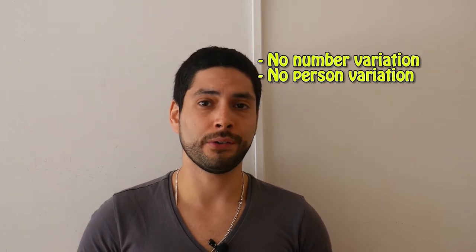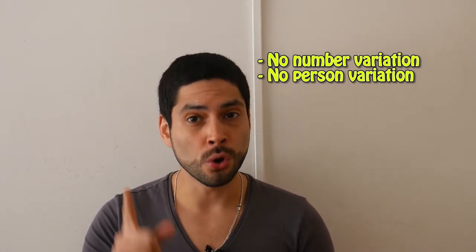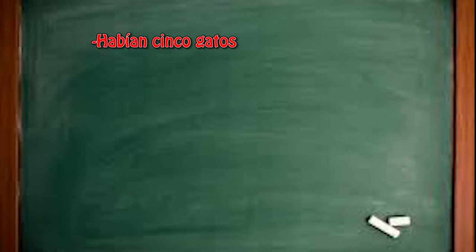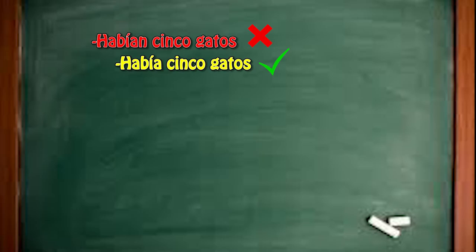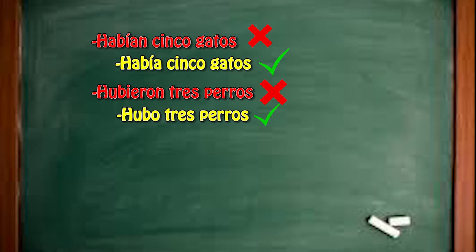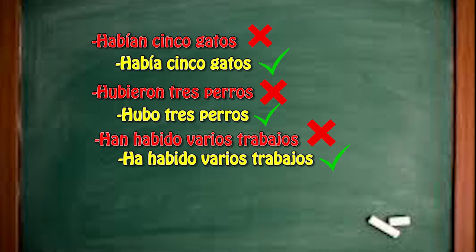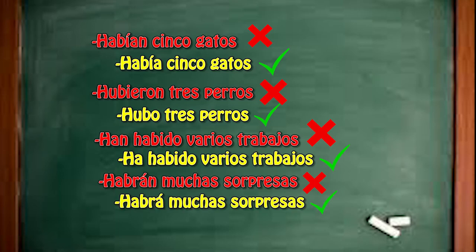I would like to emphasize that the impersonal form has no person or number variation. I'm telling you this because at least 90% of native speakers make this mistake. Let's see some examples to clarify. 'Habían cinco gatos' — oh, my ears! The right form is 'había cinco gatos.' 'Hubieron tres perros' — how horrible! The right form is 'hubo tres perros.' 'Han habido varios trabajos' and 'habrán muchas sorpresas' — come on! The right form is 'habrá muchas sorpresas.'